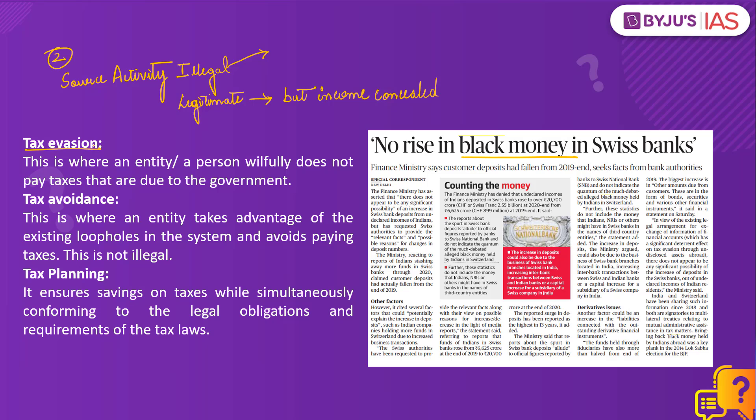Now let us talk about tax evasion, tax avoidance, and tax planning. Tax evasion is where a person or entity willfully does not pay taxes due to the government to avoid tax burden in part or full. It uses illegal means such as making false statements, underreporting income, overstating tax credits, or claiming personal expenses as business expenses. Tax avoidance is where the entity or person takes advantage of loopholes in the tax laws to avoid paying taxes. Taxpayers take unfair advantage of shortcomings in tax rules to find ways to avoid payment — within the limits of the law — and this generates black money.